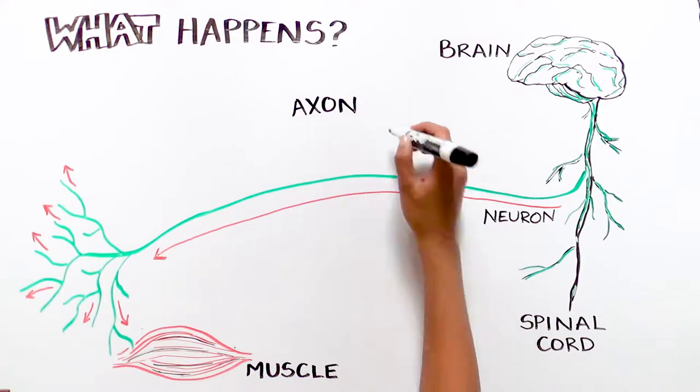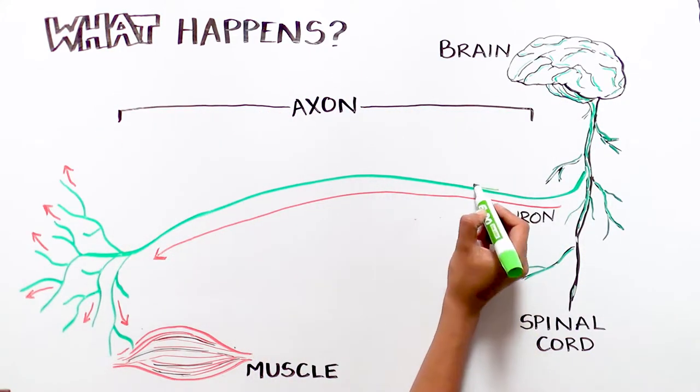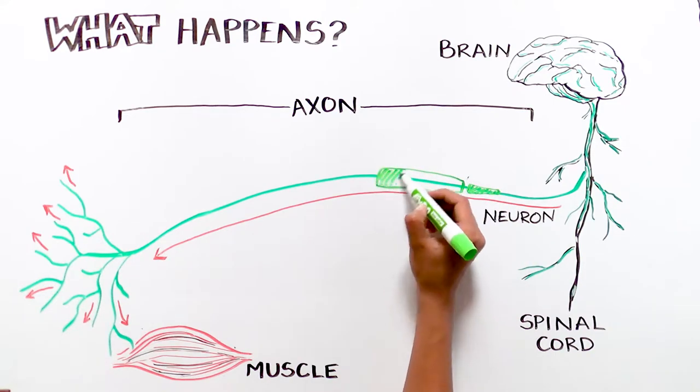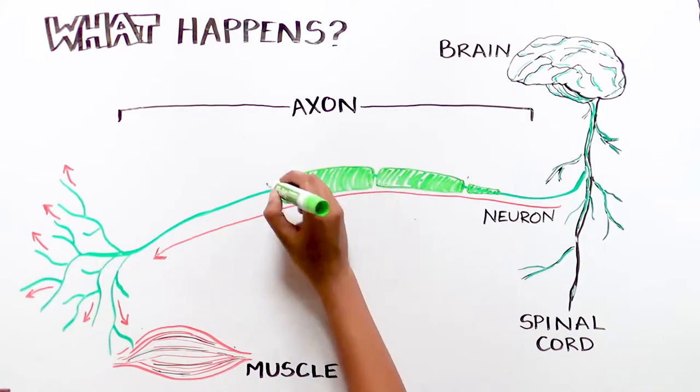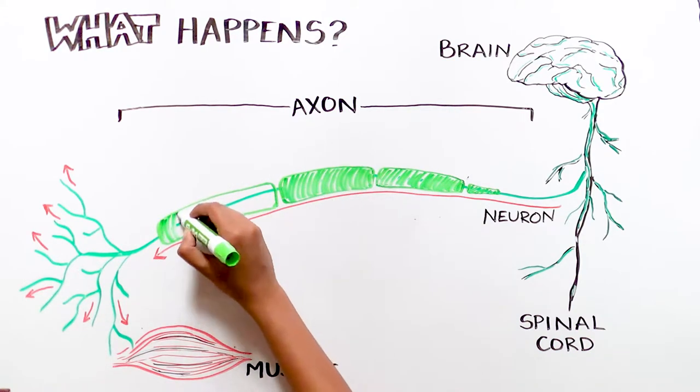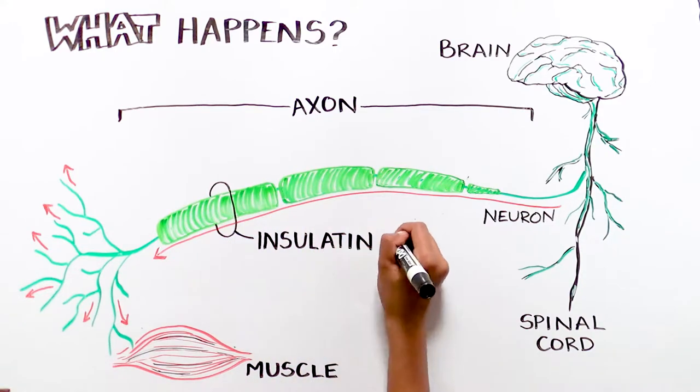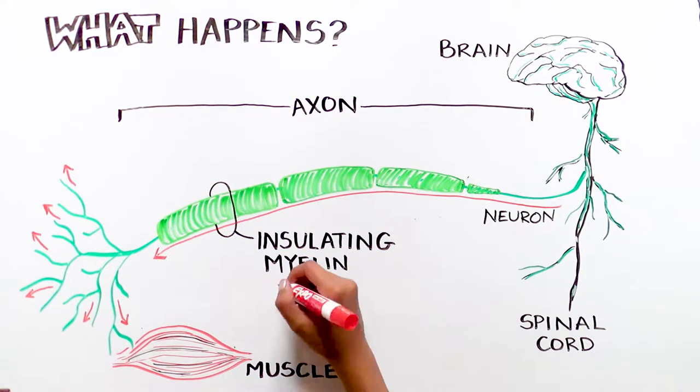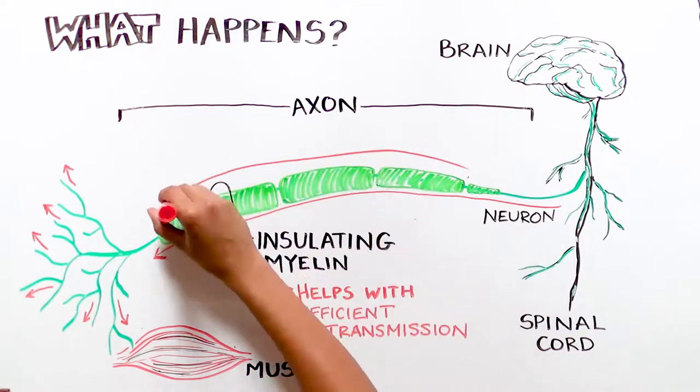The information is delivered through the part of the neuron called the axon, which is a long projection that acts like an electrical wire. Much like electrical wires send signals and are surrounded by insulation, axons carry the information and are wrapped in a protective material called myelin, which helps the information transmitted along the neurons flow more efficiently.